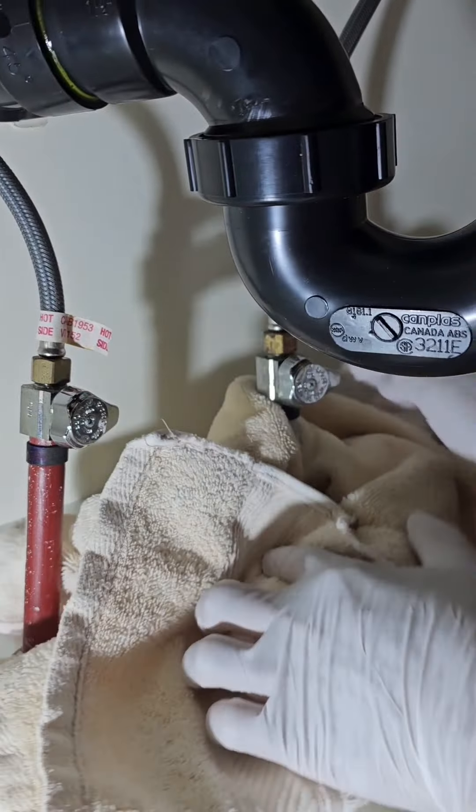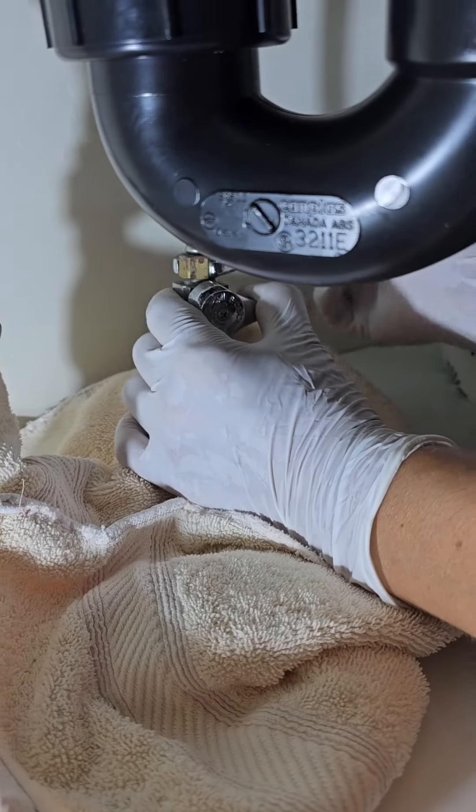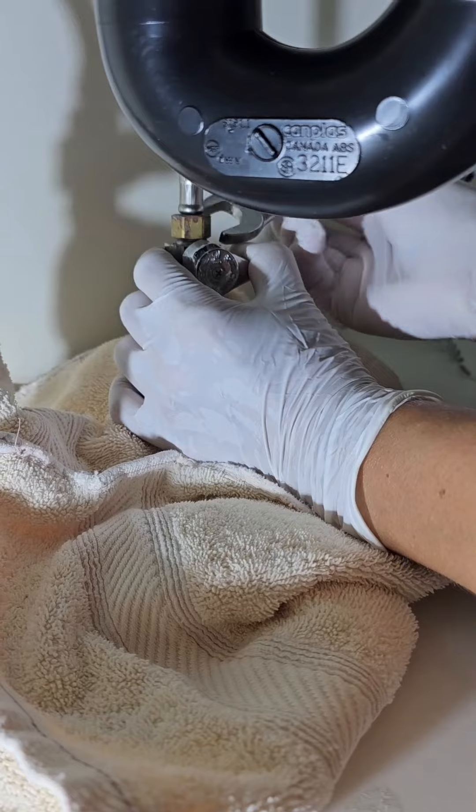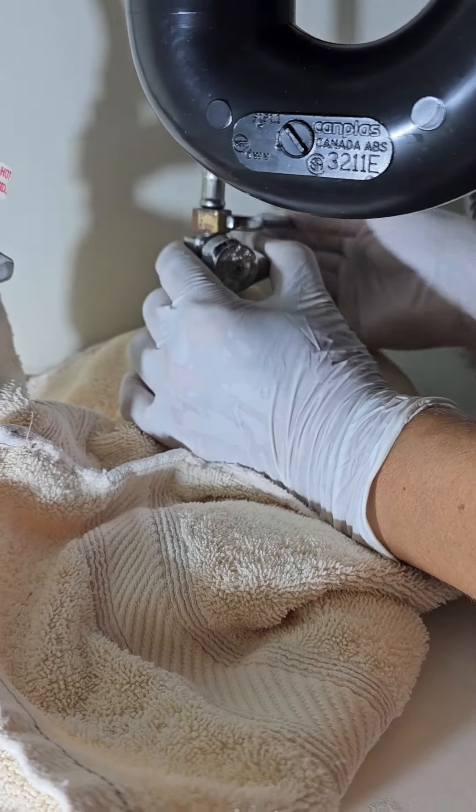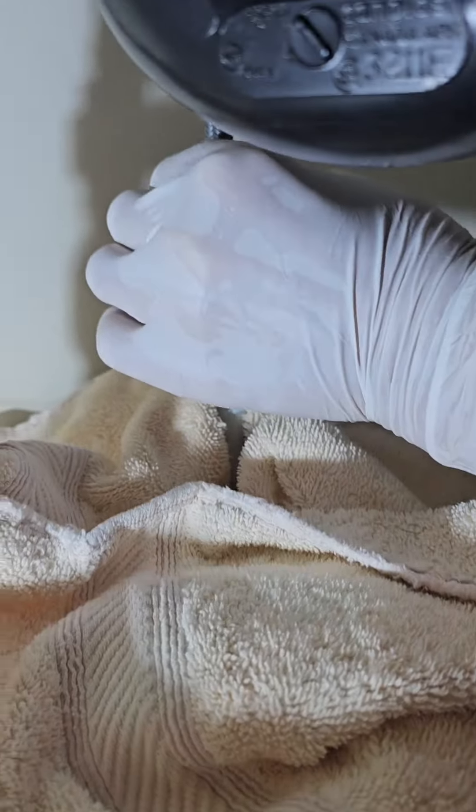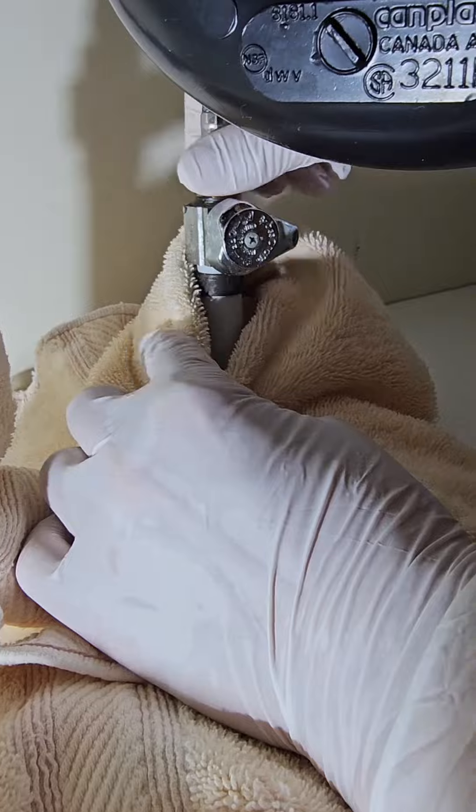Turn the shutoff valves clockwise. When they are perpendicular to the pipe, they are off. Turn on the water faucet to get out any trapped water.